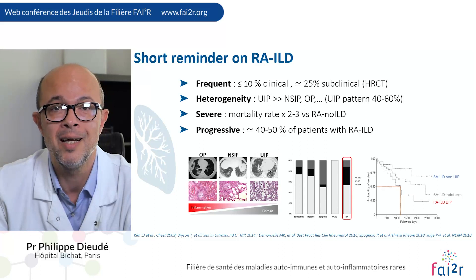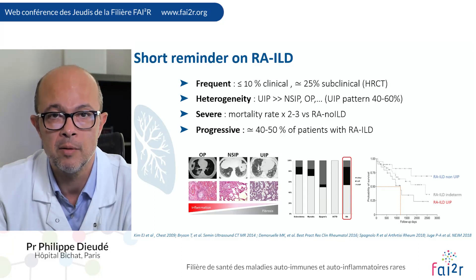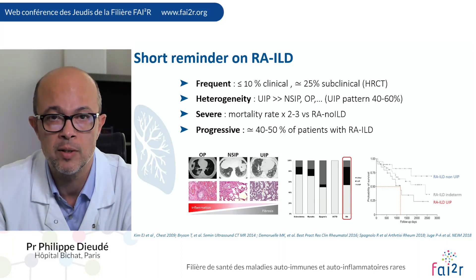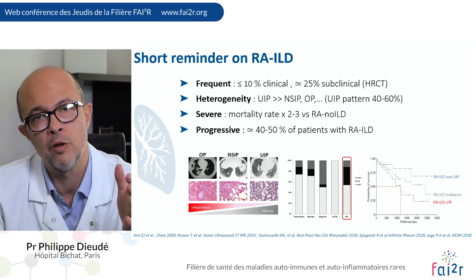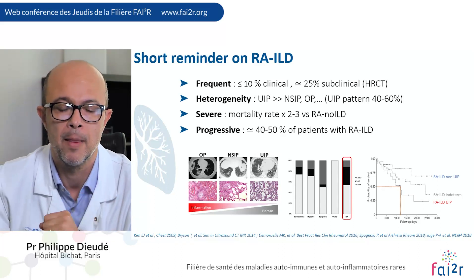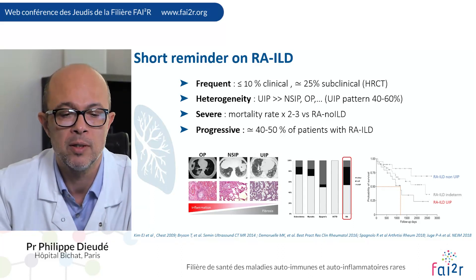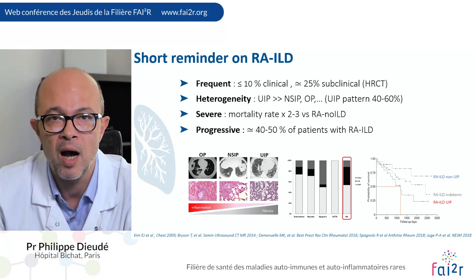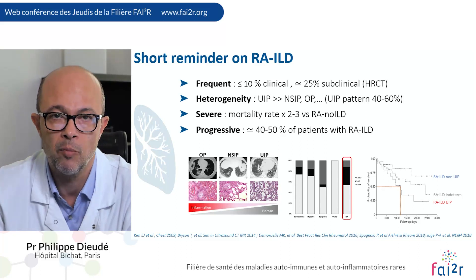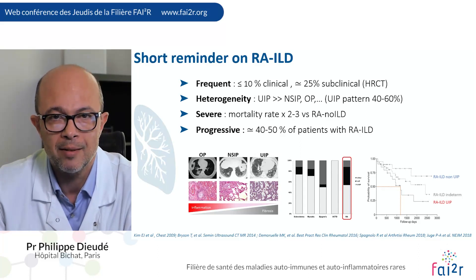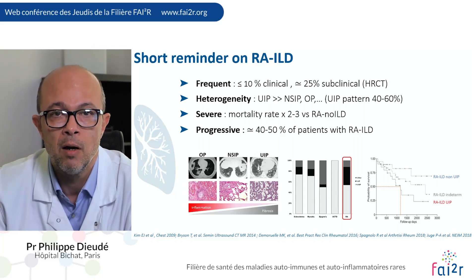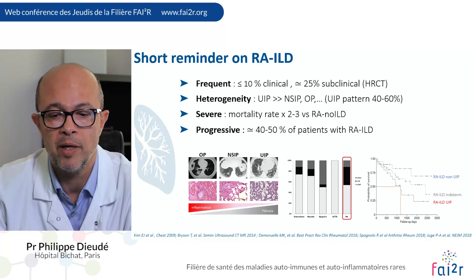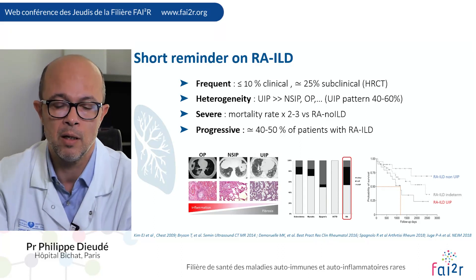The second point is the heterogeneity, as illustrated by the HRCT patterns with at least two patterns: UIP, a fibrotic pattern, and non-UIP, a more inflammatory pattern. The third key point is the severity with a high mortality rate in patients with ILD compared to patients without ILD. And last, this disease is progressive in 40 to 50% of the patients, and this is a really important point.